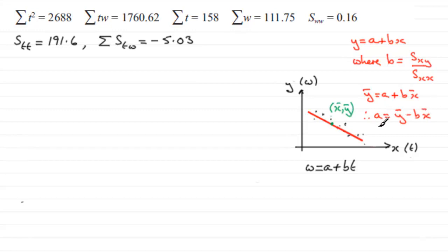Now all we've got to do is essentially work on this basis, where we have, instead of x we now have t and wherever we had y, we have a w. So what we've got then is that b must be equal to stw, all divided by stt.